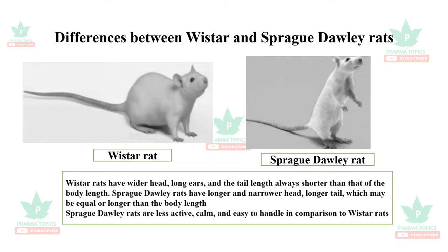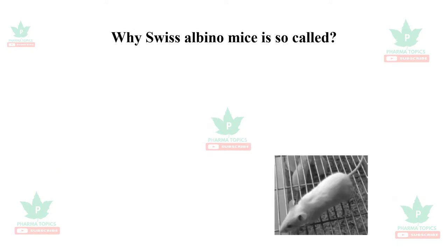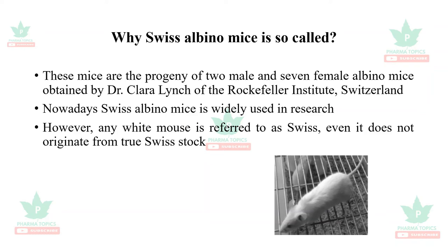Why is the Swiss albino mouse so called? These mice are the progeny of two male and seven female albino mice obtained by Dr. Clara Lynch of the Rockefeller Institute, Switzerland. Nowadays, Swiss albino mice are very widely used in pharmacological research. However, any white mouse is often referred to as Swiss, even if it does not originate from the true Swiss stock.